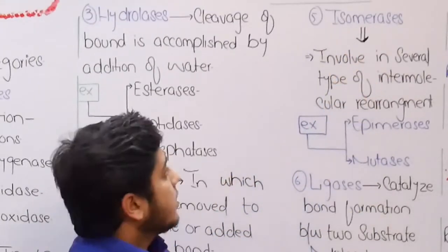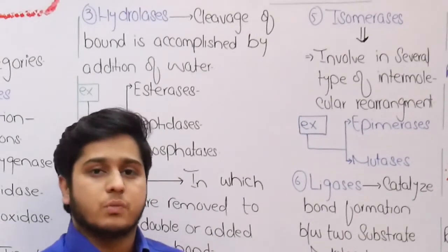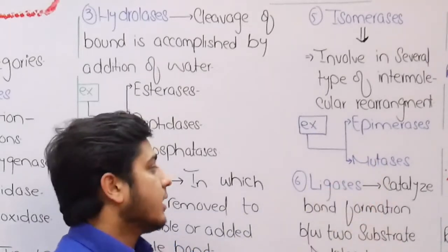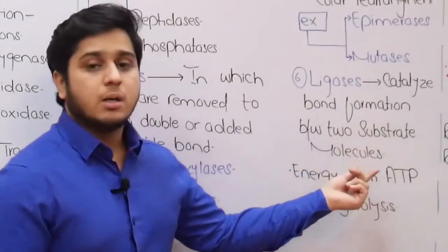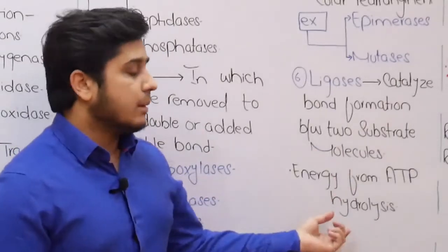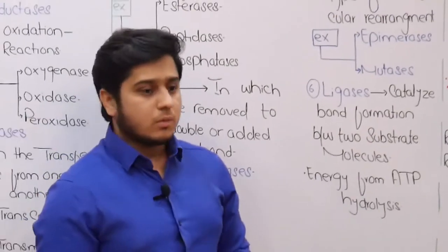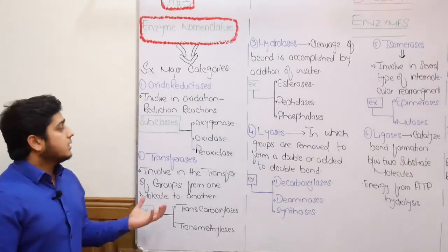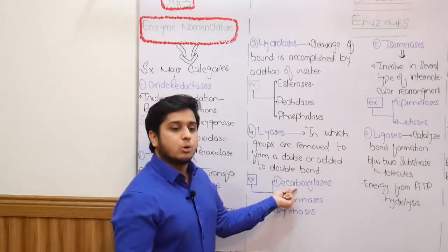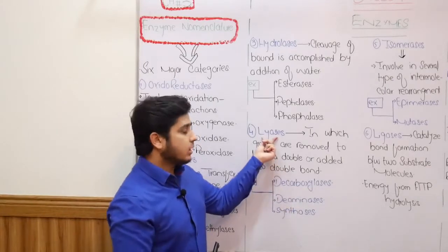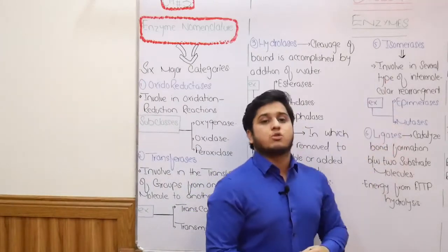The fifth category is isomerases: this is a heterogeneous group of enzymes involved in intramolecular rearrangement. Examples include epimerases and mutases. The sixth and last category is ligases: these are enzymes involved in bond formation between two substrate molecules, and they require ATP for their functioning. For MCQ practice: decarboxylases belong to lyases, and mutases belong to isomerases.